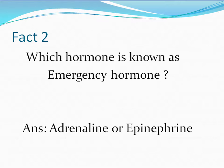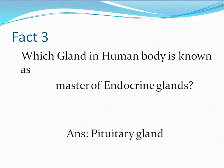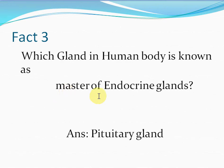Next question: which gland in the human body is known as the master of endocrine glands? The pituitary gland, which is present in the brain, is known as the master of endocrine glands, because the hormones released from the pituitary gland control other endocrine glands in the body.